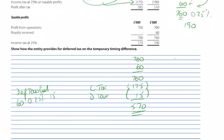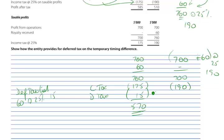In the next year, again there's $700,000 profit, and this time there's no royalty income, so $700,000. But taxable profits are now $700,000 plus the $60,000 at 25%, giving $190,000 current tax. I have no need for the $15,000 deferred tax liability, so I can release it — debit the deferred tax liability, credit the income statement through the tax charge. That gives $525,000 profit after tax for this second year.